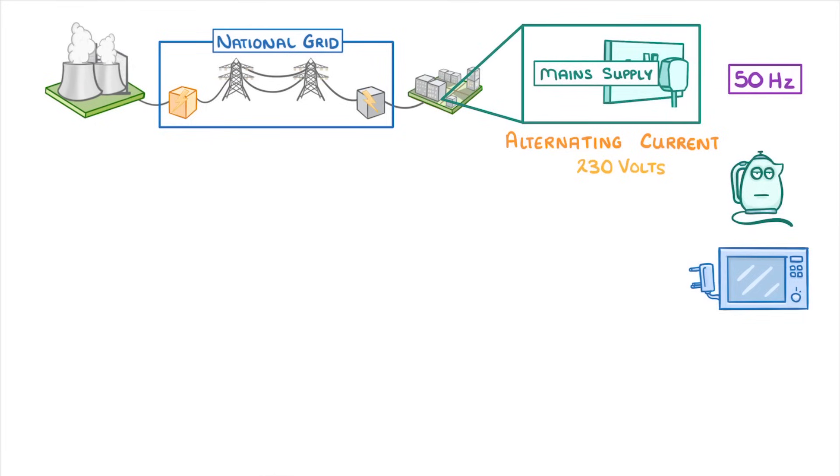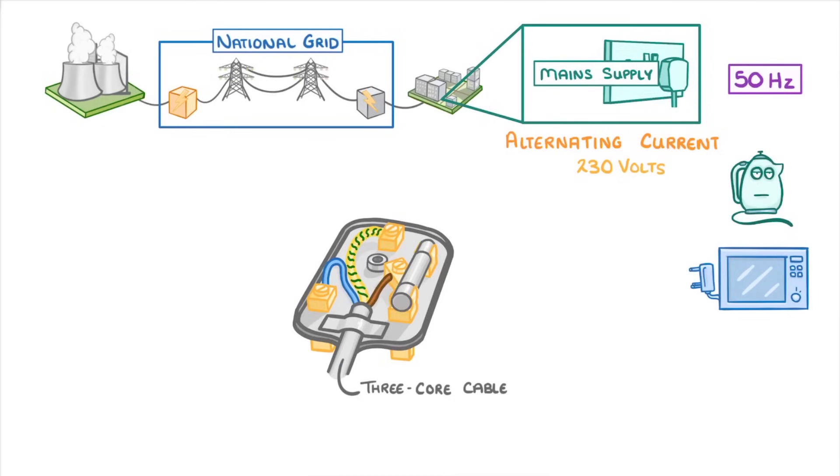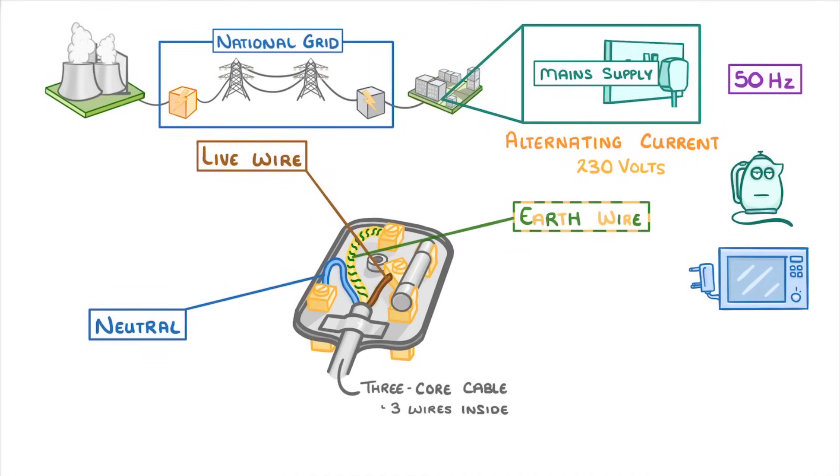So whenever we plug an electrical appliance from our home into a plug socket we're connecting it to the mains supply. This usually involves a three core cable which means that it's a cable with three wires inside of it: the live wire, the neutral wire and the earth wire.